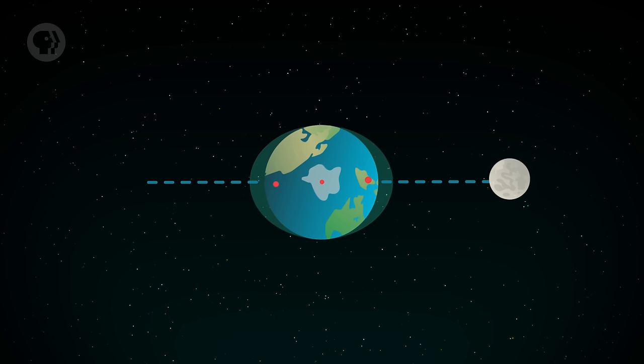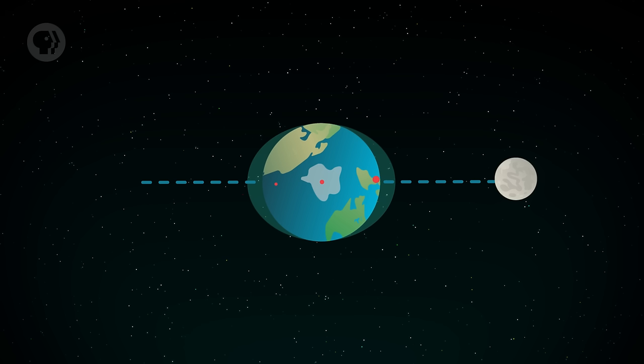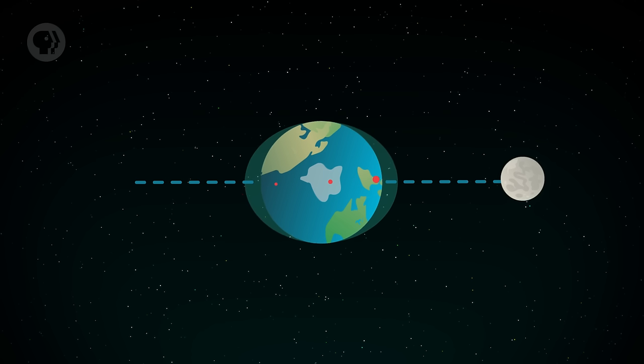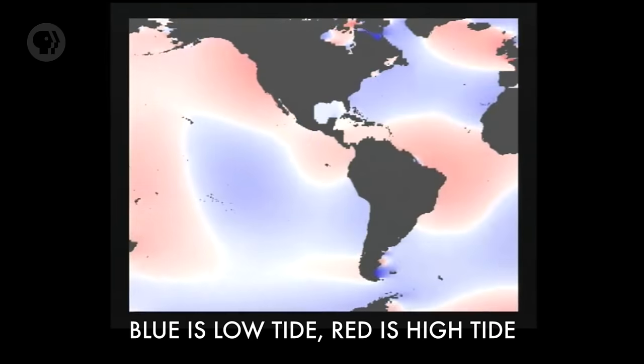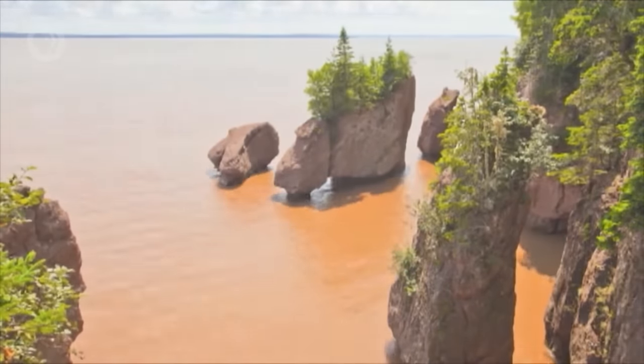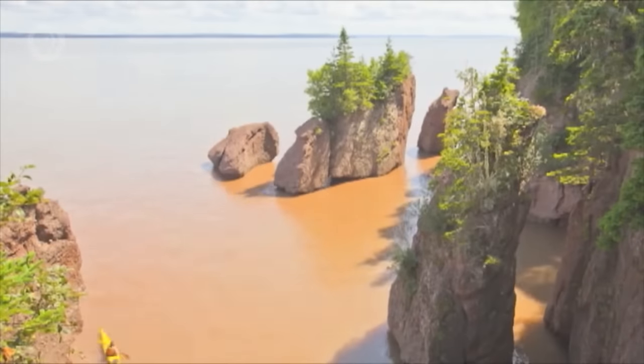This is probably the weirdest thing about tidal forces. You might expect only one bulge on the side of the Earth facing the Moon. But remember, we measure gravity from the centers of objects. The side facing the Moon feels a stronger pull than the Earth's center, so it's pulled away from the center. But the far side feels a weaker force, meaning the center is being pulled away from it — which is exactly the same as the far side being pulled away from the center. The water bulges up where the tidal force is strongest, giving us high tide; where it's low, the water is pulled away and it's low tide.